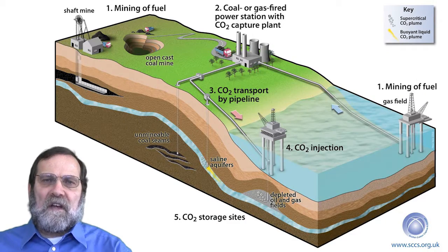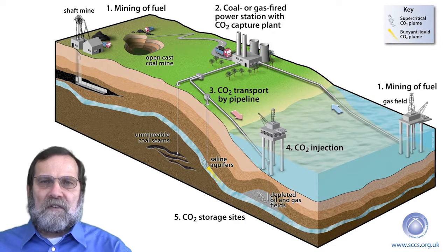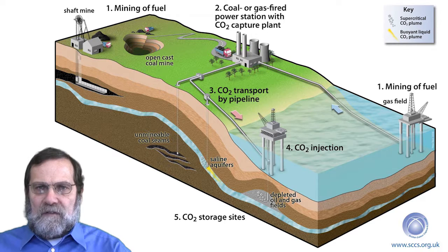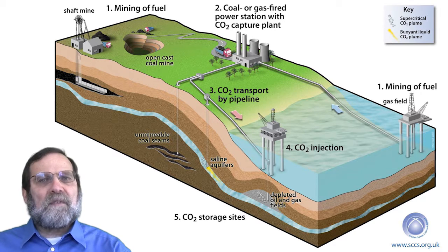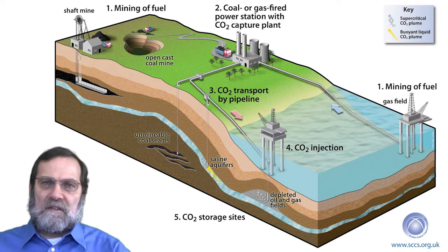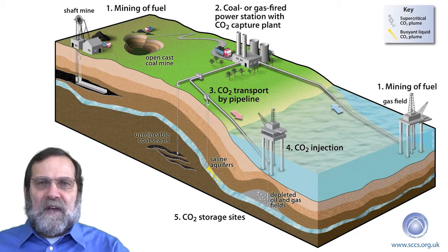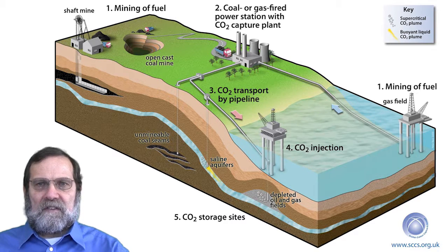Physical separation, chemical separation, or combinations of both may remove carbon dioxide from power plant gas streams. Physical methods include cryogenic and membrane separations. Chemical methods include liquid solvents and solid sorbents.